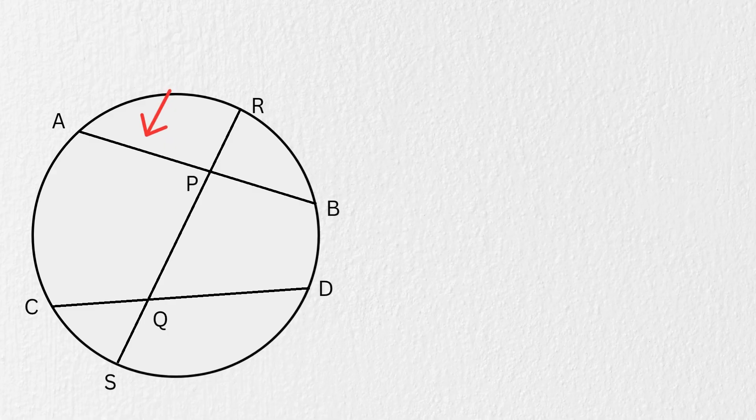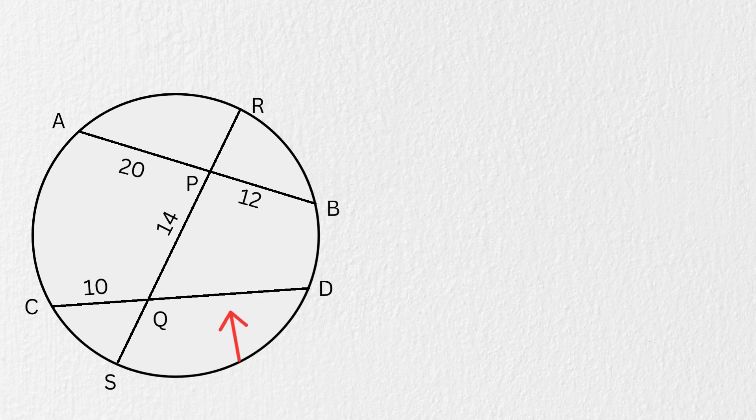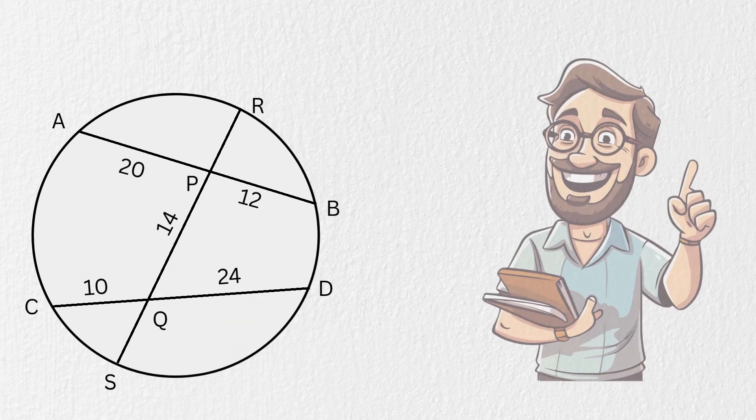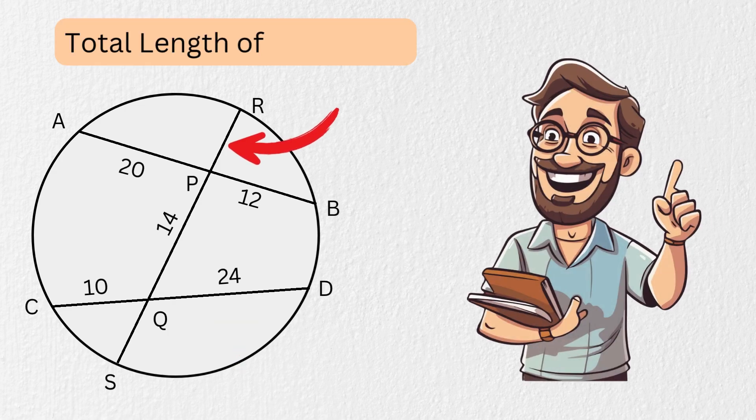Such that the length from point A to point P is 20 units, the length from point P to point B is 12 units, the length of segment PQ is 14 units, the length from point C to point Q is 10 units, and the length from point Q to point D is 24 units. And our goal is to find the total length of chord RS.